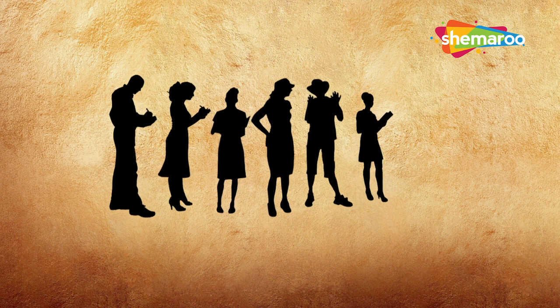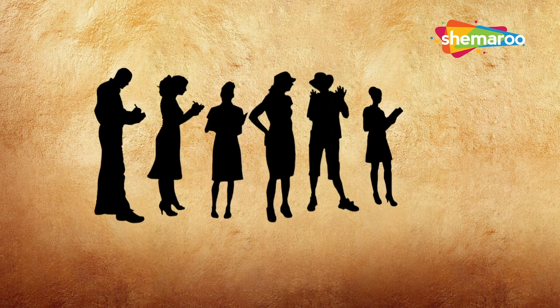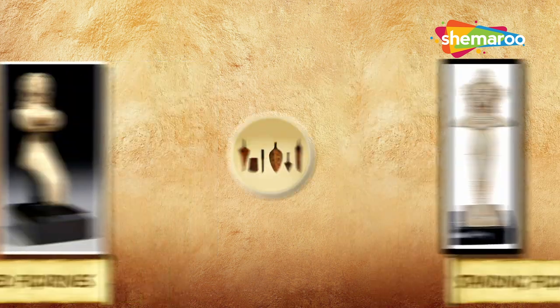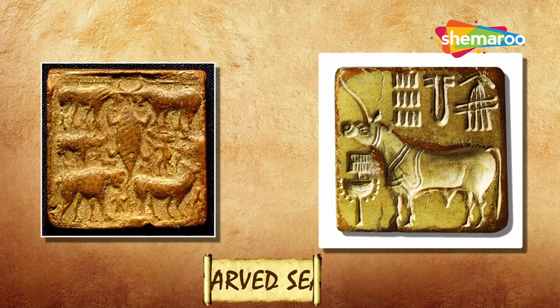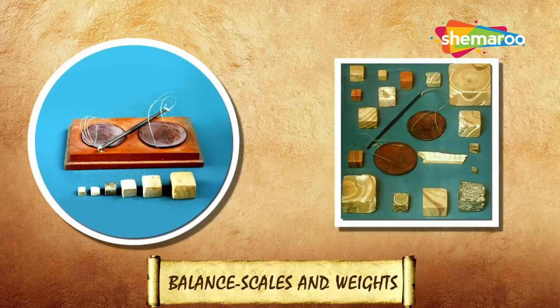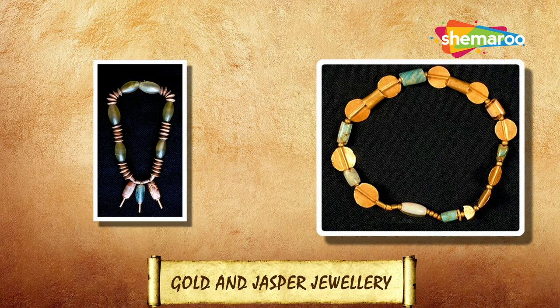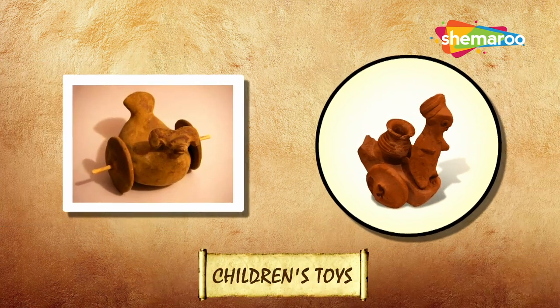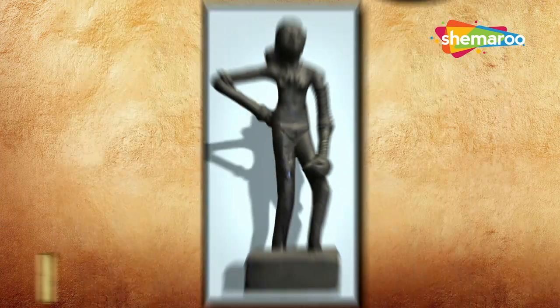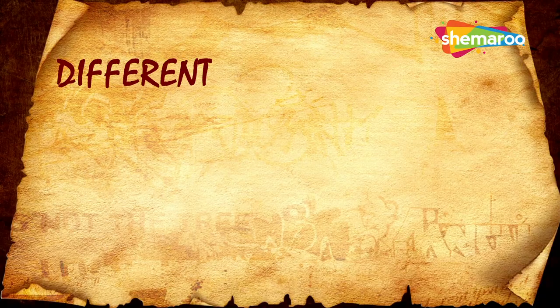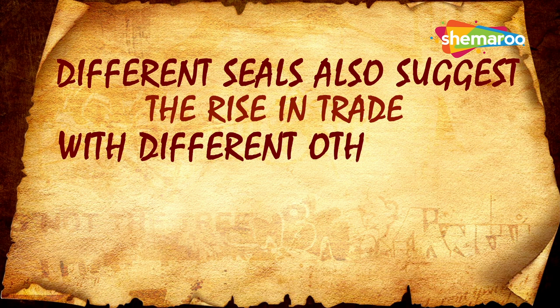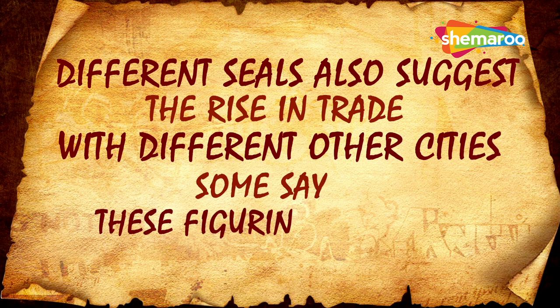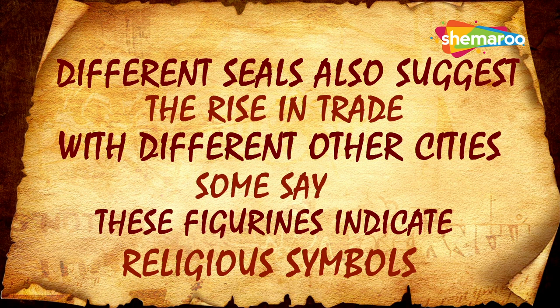During excavation, numerous objects were found, including seated and standing figurines, copper and stone tools, carved seals, balance scales and weights, golden jasper jewelry and children's toys. Notable among these are the Dancing Girl, the Priest King and the Pashupati seal. Different seals also suggest a rise in trade with different other cities, and some say these figurines indicate religious symbols.